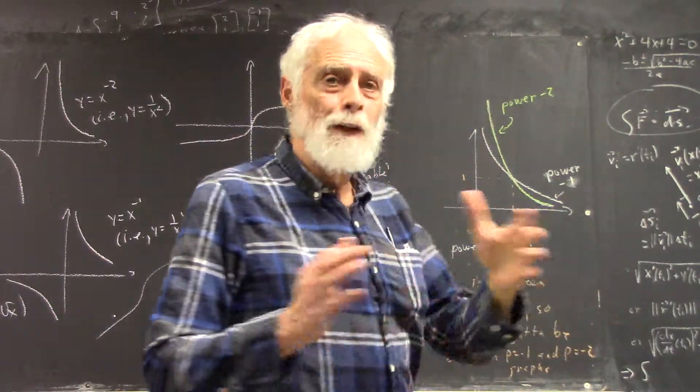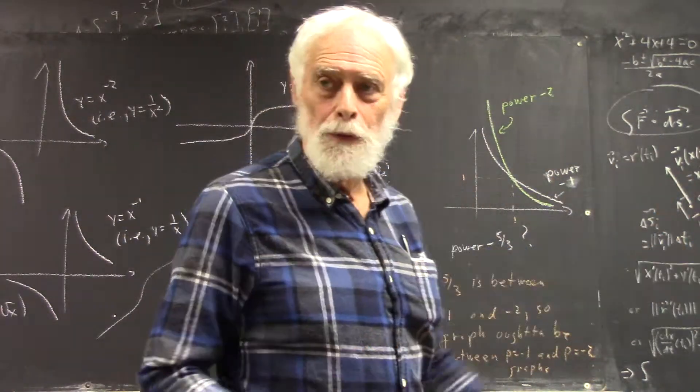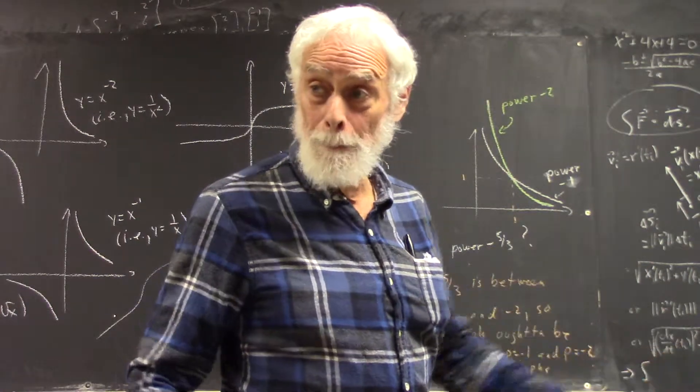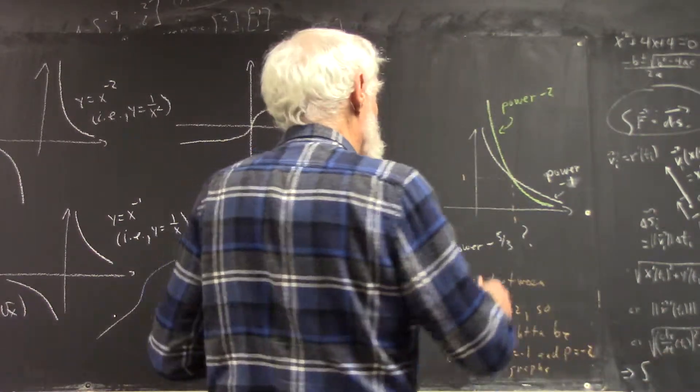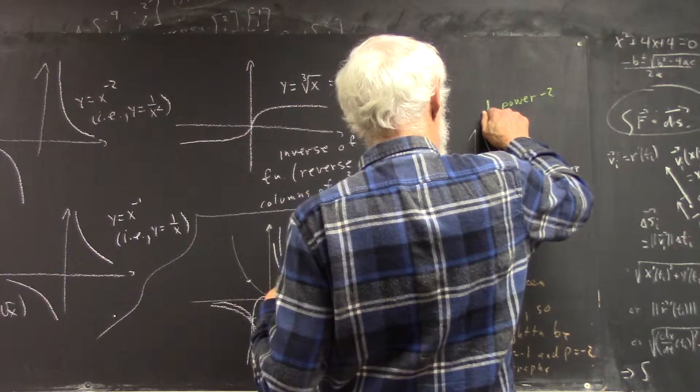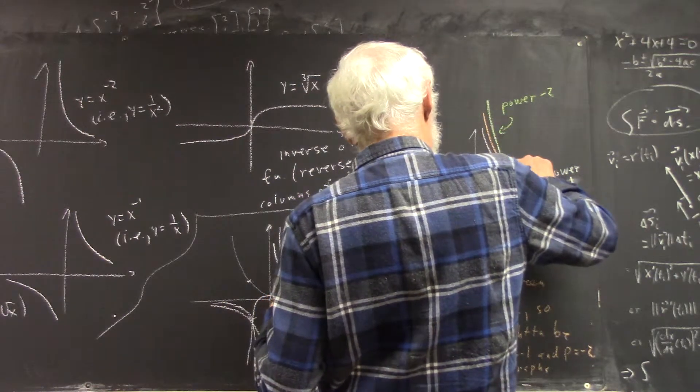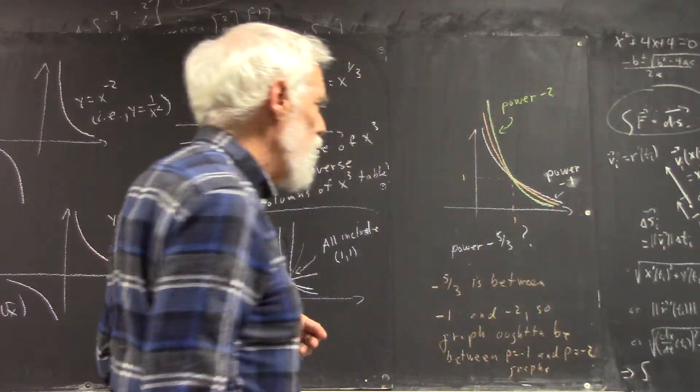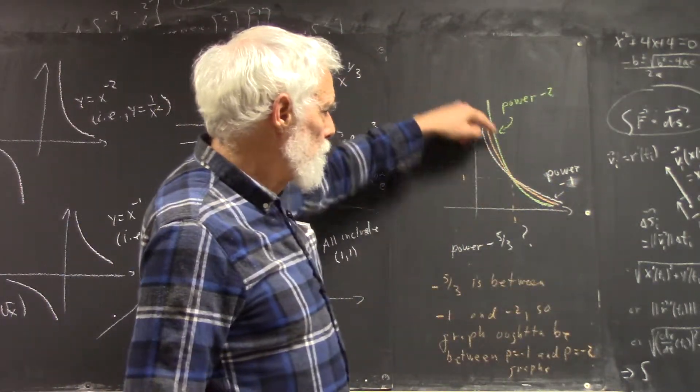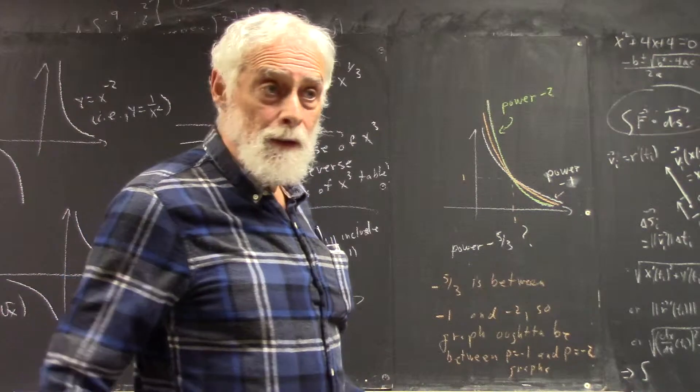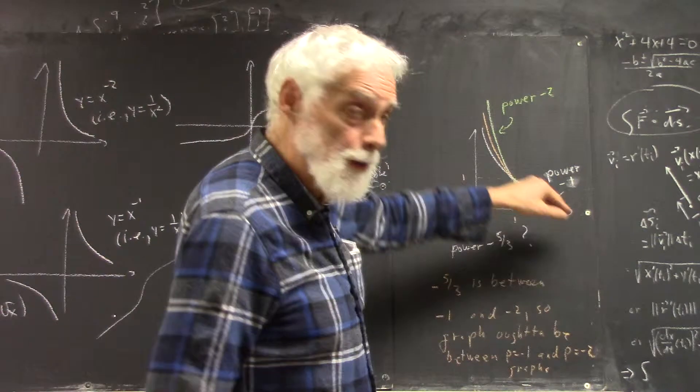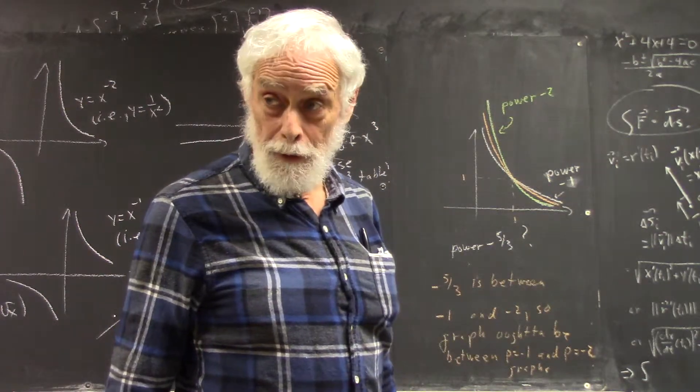Because if x equals one, x to any power equals one, because one to any power is one. And we know that. We have to be able to relate that to the arithmetic, but all I'm going to say is, well, okay. So if I want to draw a graph of the five-thirds power, I might not have it exactly at the right point between these two. But I see how it compares to the graph of the negative one power and the negative two power.